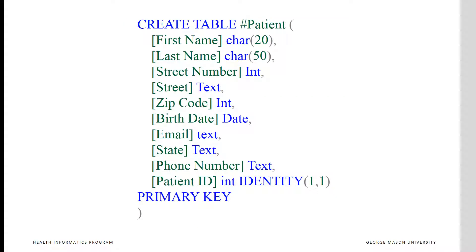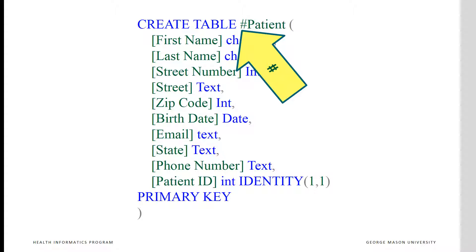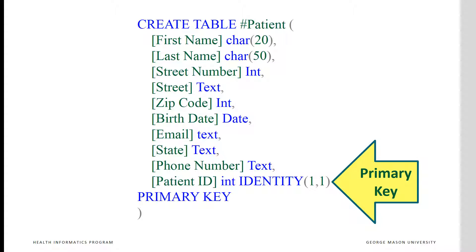Here is code that can create the patient table. Note that field names are put in brackets because they contain spaces. Also note that the hashtag before the table name indicates that the table is a temporary table, which will disappear once the SQL window is closed. Note that the primary key is automatically generated as an integer that increments by one every time a new record is entered.